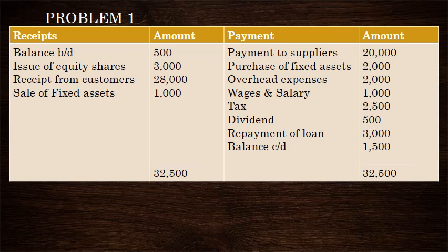The 2nd step is overhead expenses. The operating expenses are the operating expenses under the direct method. This direct method also covers non-operating expenses.